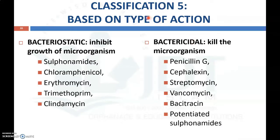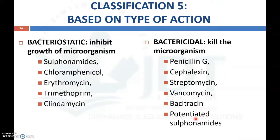The fifth classification is based on action — whether the drug kills the microorganism or inhibits its growth: bacteriostatic or bactericidal. Examples of bacteriostatic antimicrobial agents are sulfonamides, chloramphenicol, erythromycin, trimethoprim, and clindamycin — these inhibit growth but may not kill the microorganism. Examples of bactericidal drugs that kill the microorganism are penicillin G, cephalexin, streptomycin, vancomycin, bacitracin, and potentiated sulfonamides.